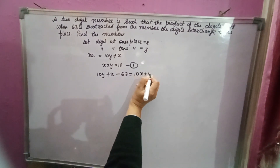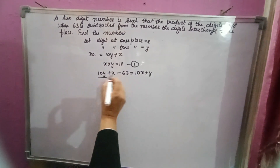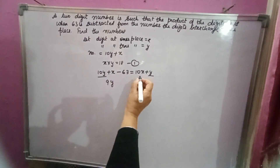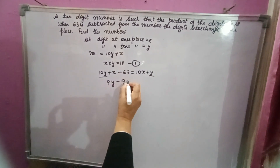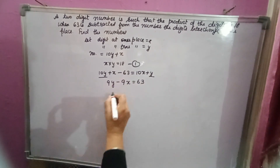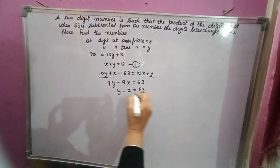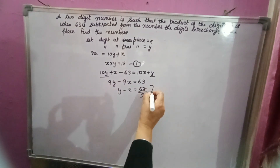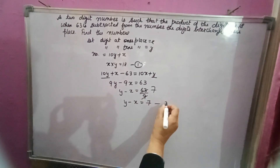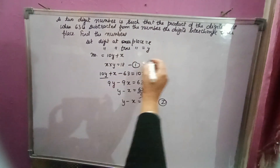After interchanging, the number becomes 10x plus y. Simplifying: 10y plus x minus 63 equals 10x plus y, which gives 9y minus 9x equals 63. Dividing both sides by 9, we get y minus x equals 7. This is the second equation.